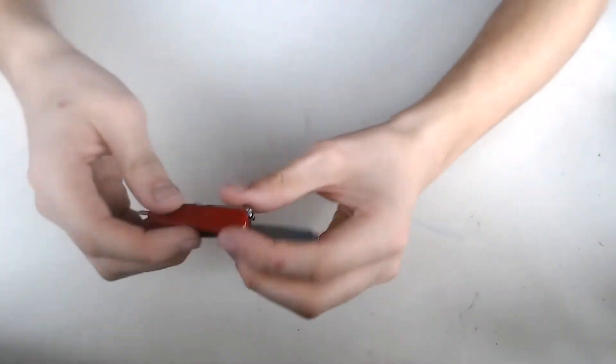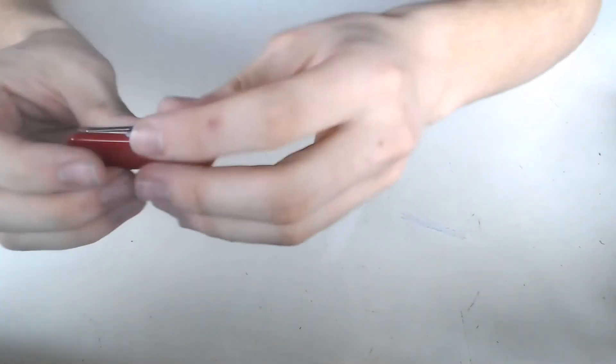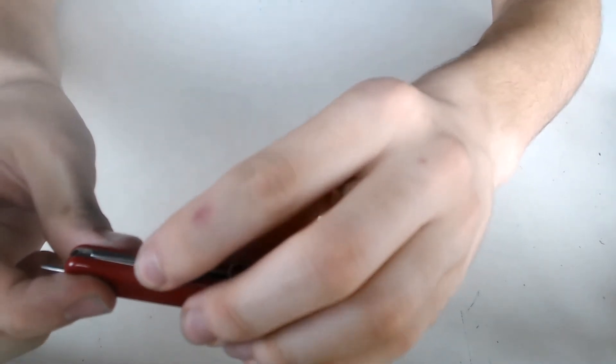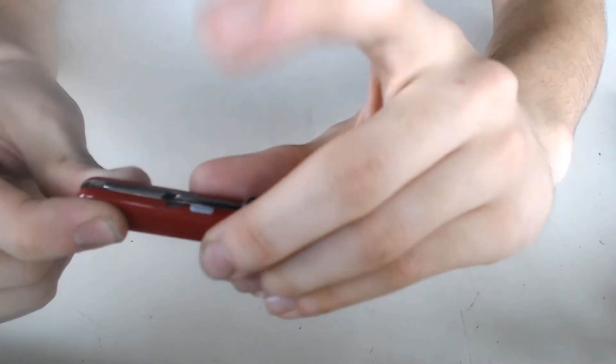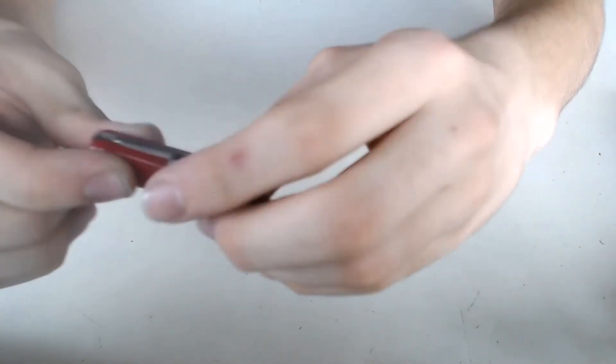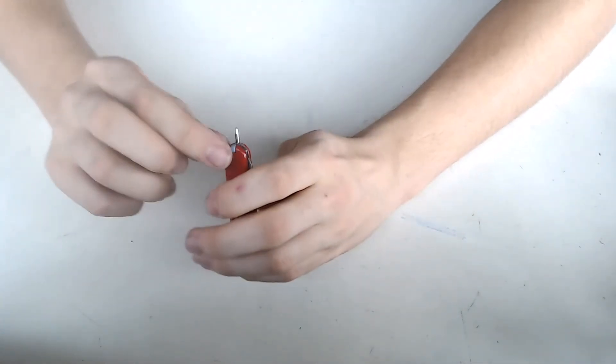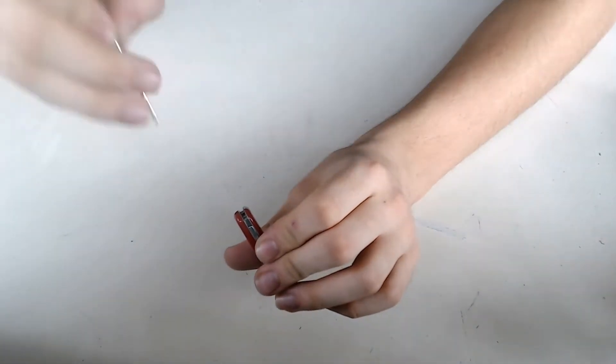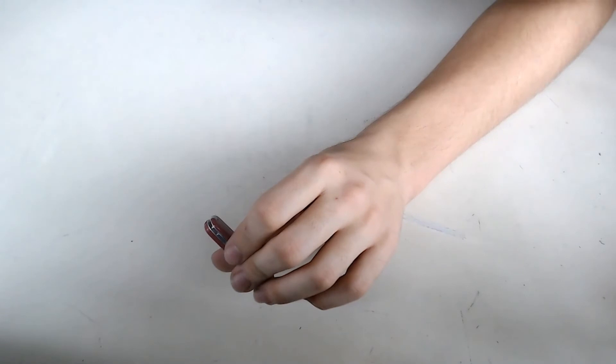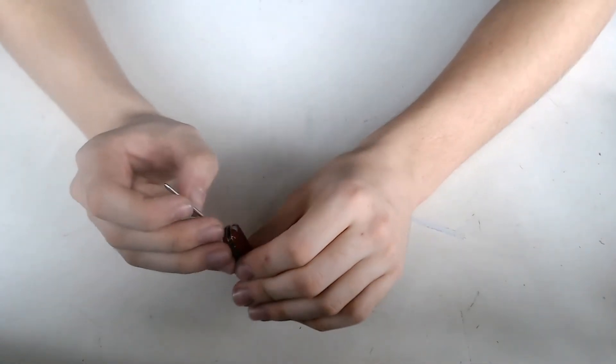To close the pen, what you do is you press the notch in, the blue part in, and then slide back. To replace the pen, what you do is you bring it out and then you just pull it out as normal. Then you get another one and put it back in.